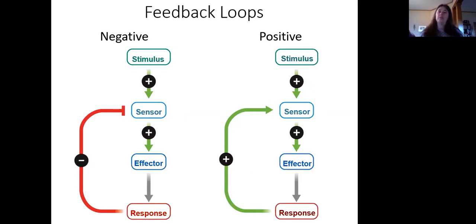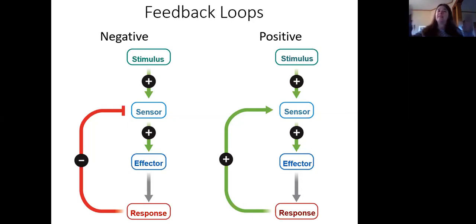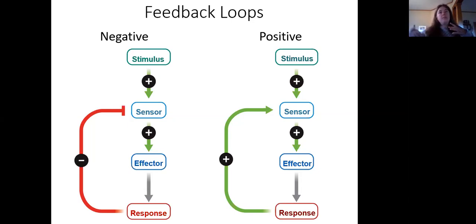In a negative feedback loop, you have your departure from the set point, your sensor detects that, it sends a signal to the effectors, which trigger a response, which then brings the conditions in the body back to the set point. That's what makes it negative — you're diverging from the set point, and then the response brings it back. You're going in the opposite direction from the stimulus.